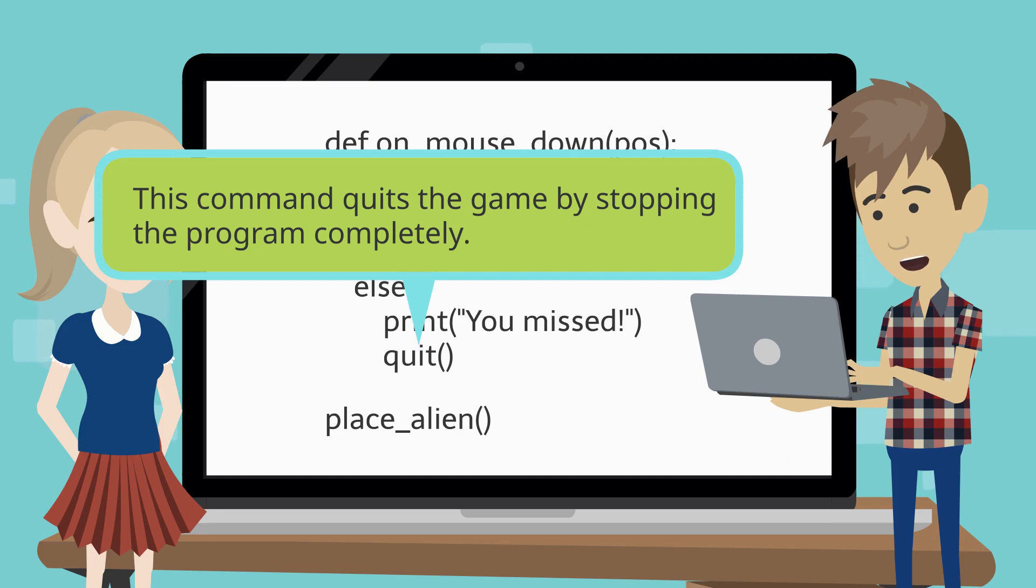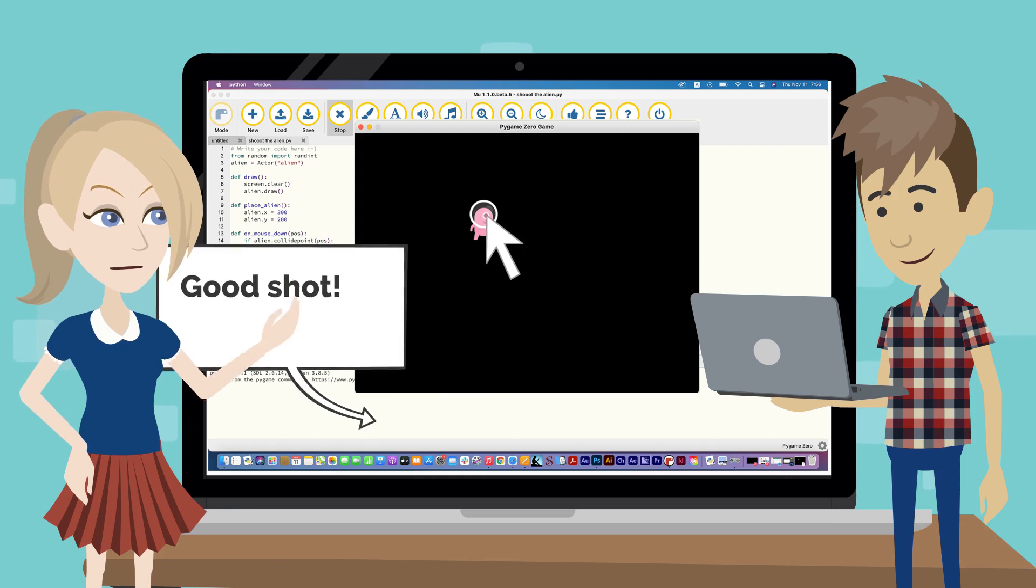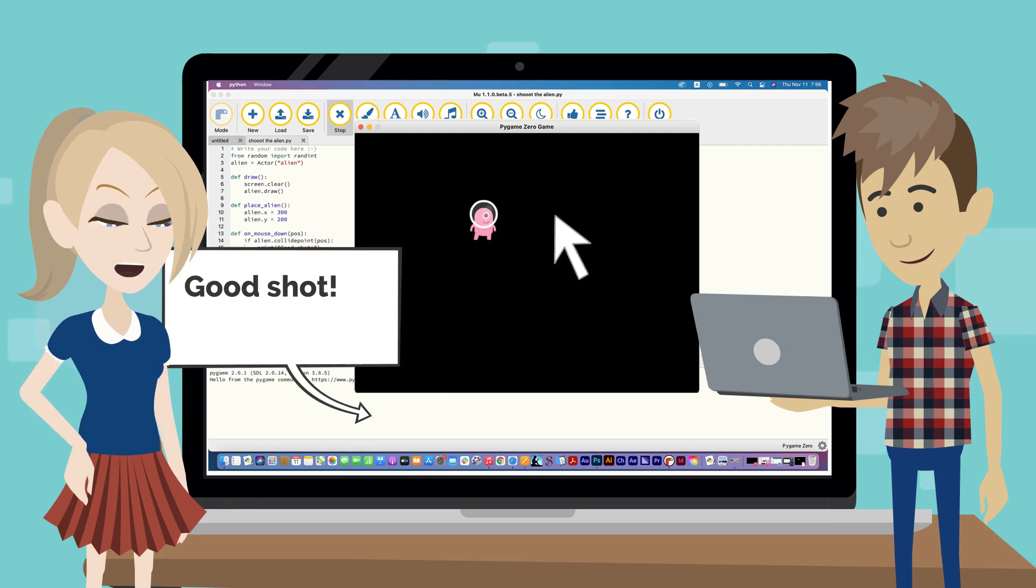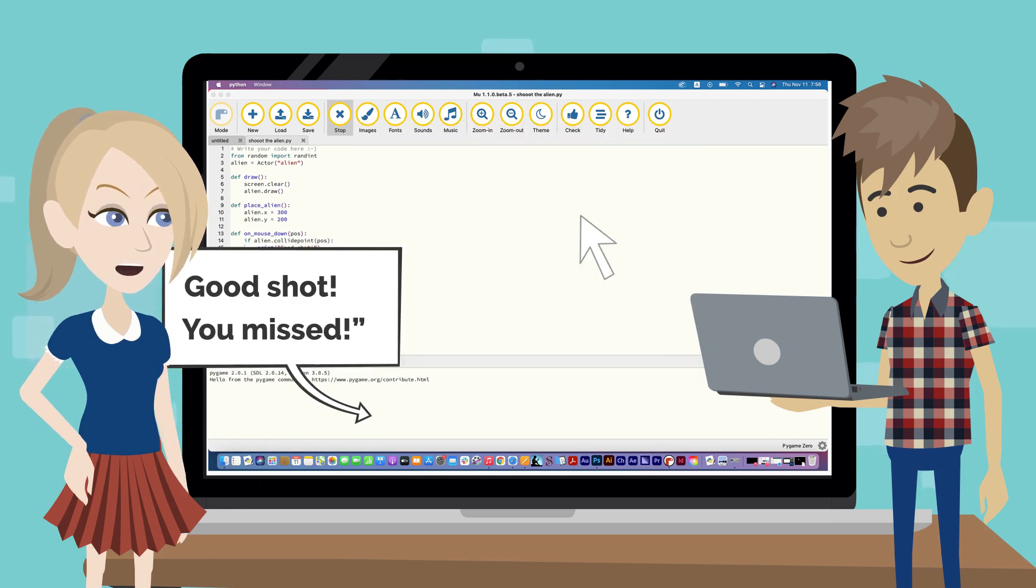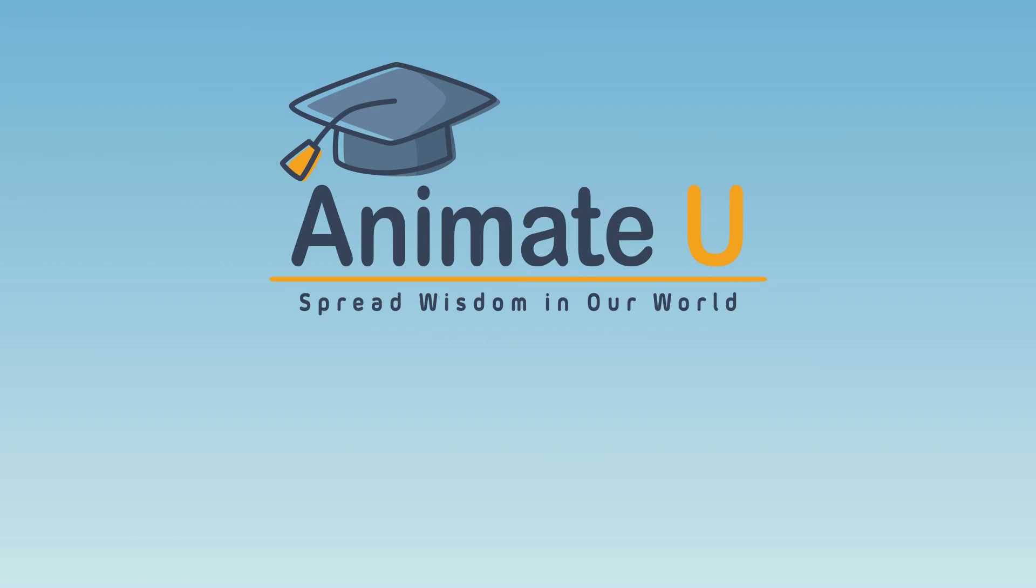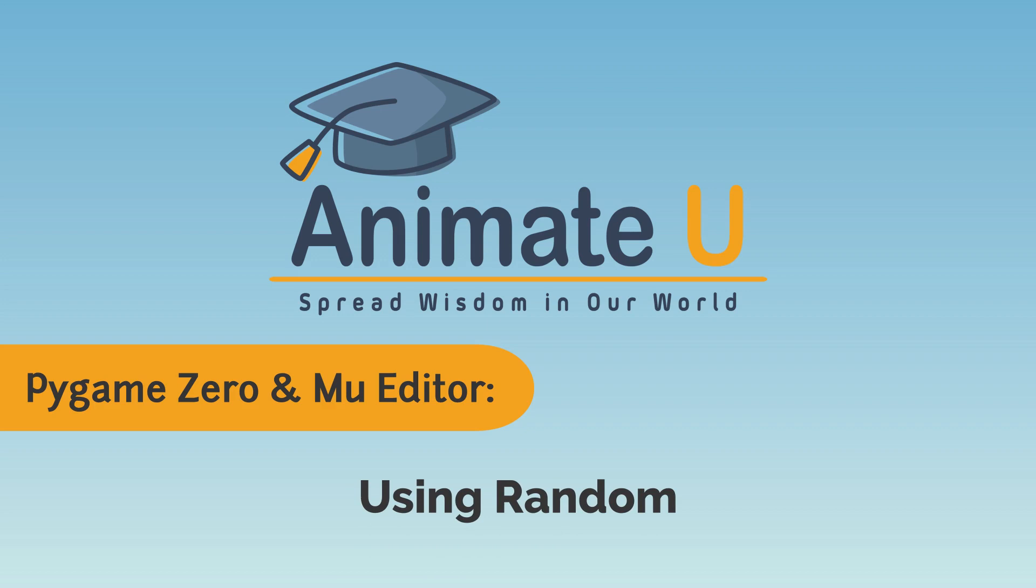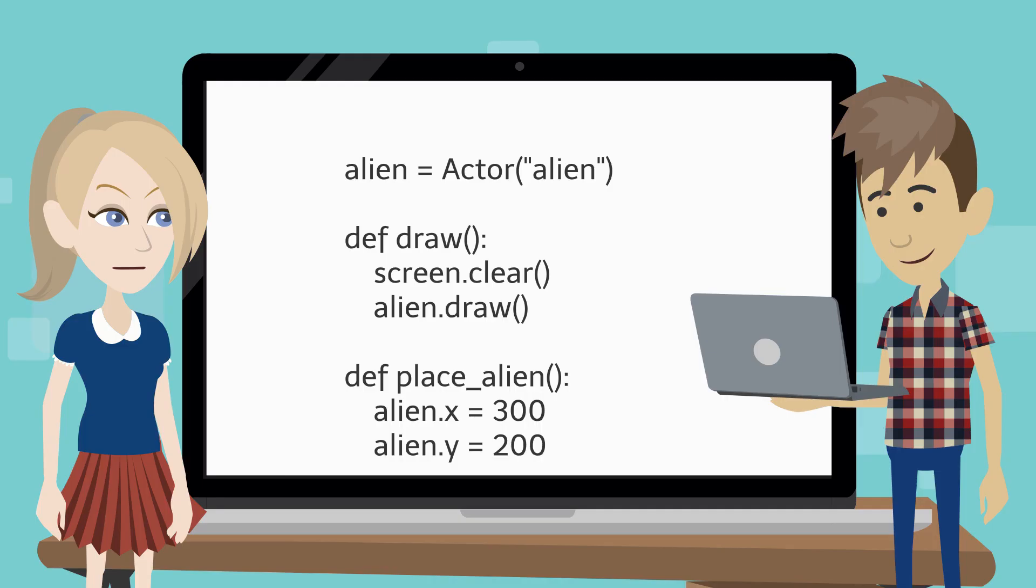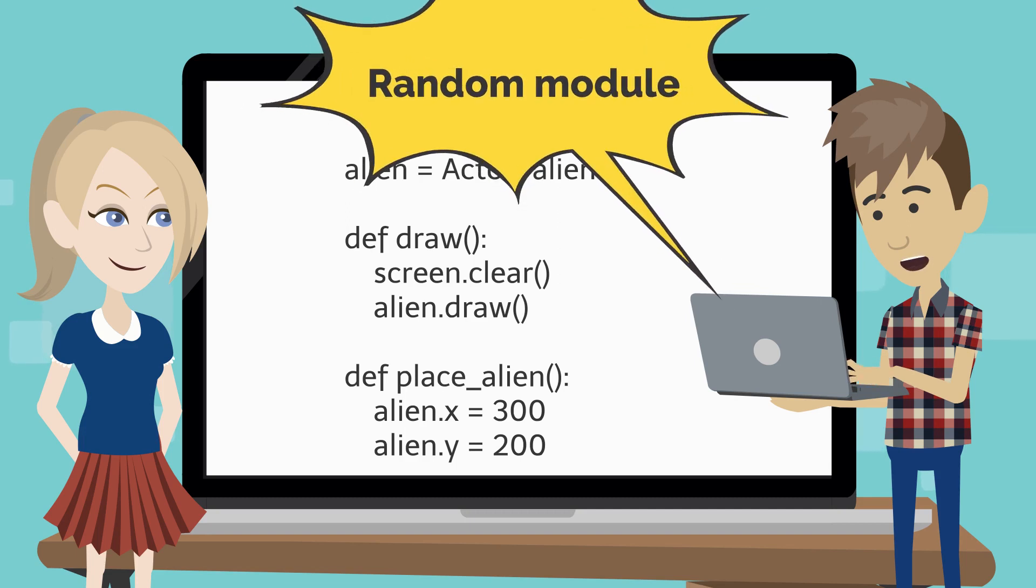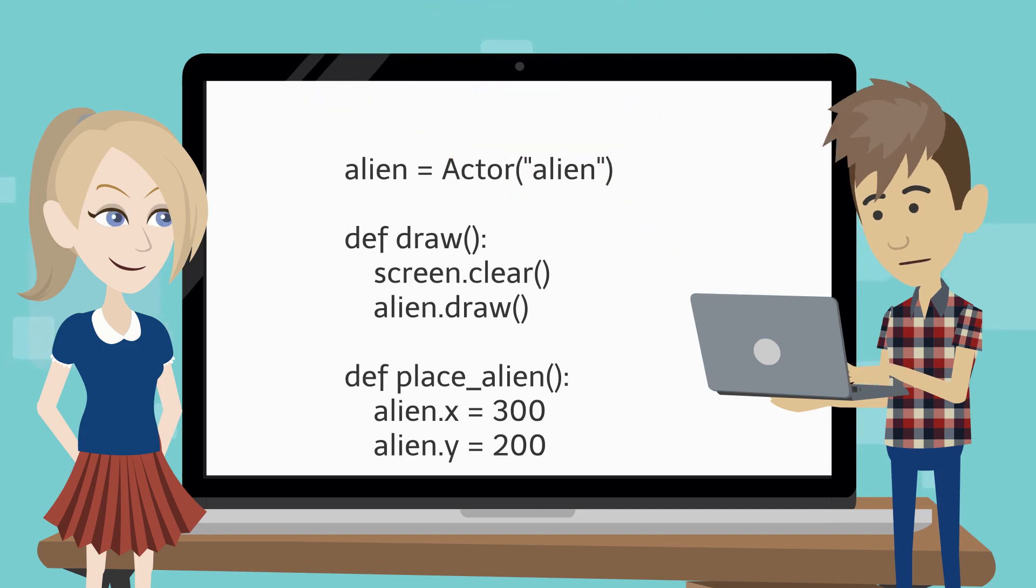This command quits the game by stopping the program completely. At this point, if the player cannot hit the alien, the you missed message will be displayed and the game will end. Using Random. The game is very easy at this point because the alien is always drawn in the same place on the screen.